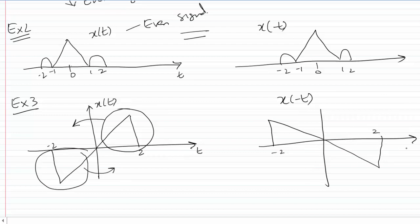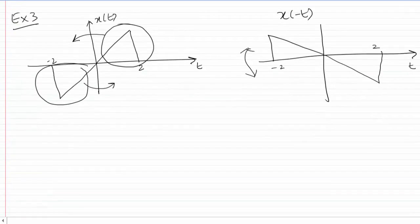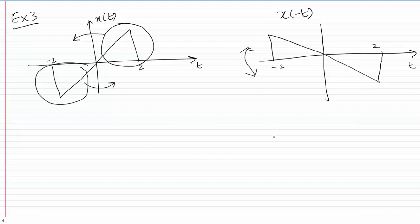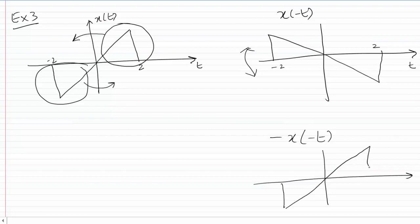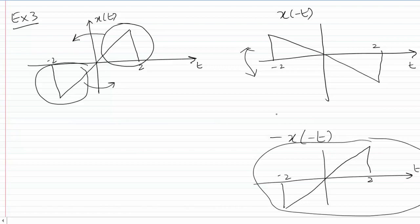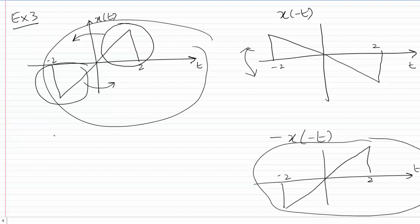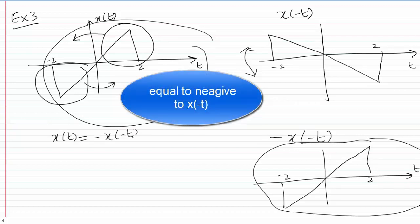Now we observe that x(t) and x(-t) are not the same. But if I flip x(-t), I need to find the negative of x(-t). When I plot negative x(-t), it turns out to be the same as x(t). So we can see that x(t) equals minus x(-t), and therefore this signal is an odd signal because it has odd symmetry.